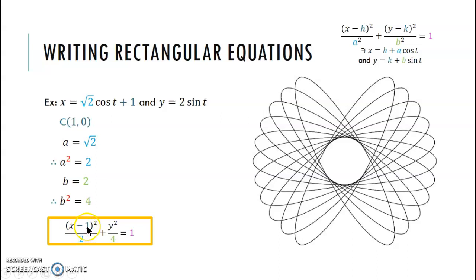And so we get x minus one, that's our h squared, over two, that's our a squared, plus y squared, y squared because y minus zero is just y. So y squared divided by b squared, which is our four, is equal to one. Hopefully, you got that when you went through and solved it.